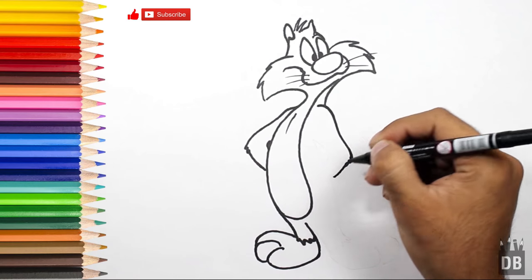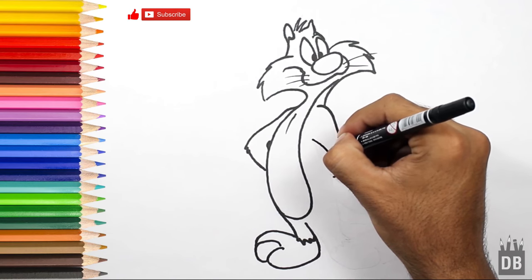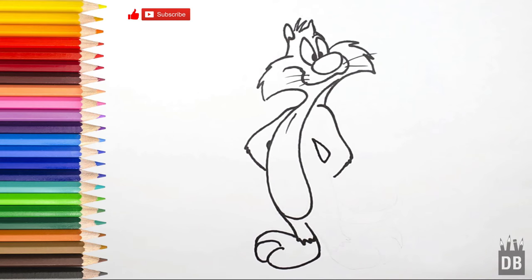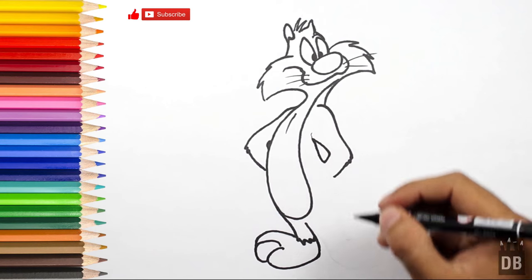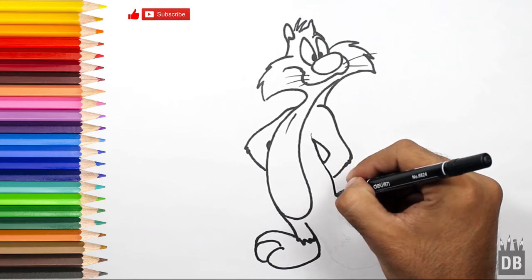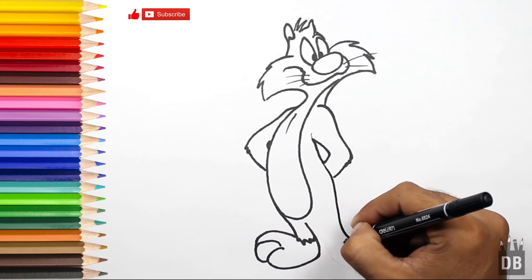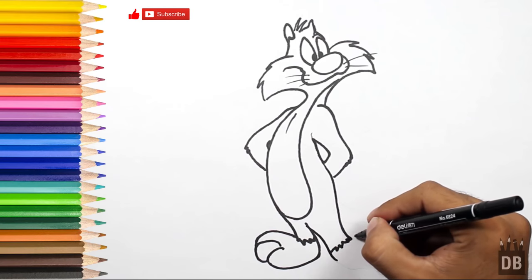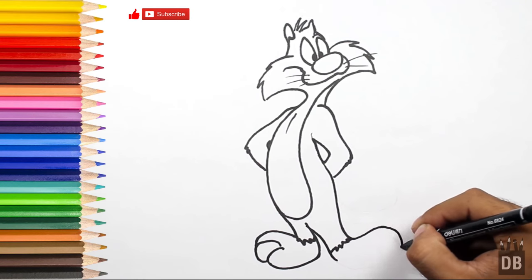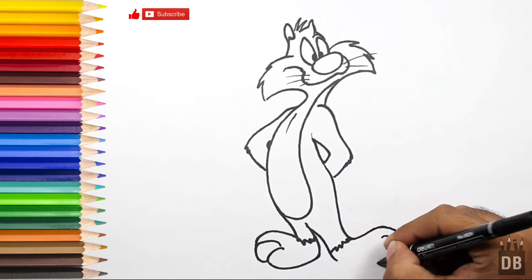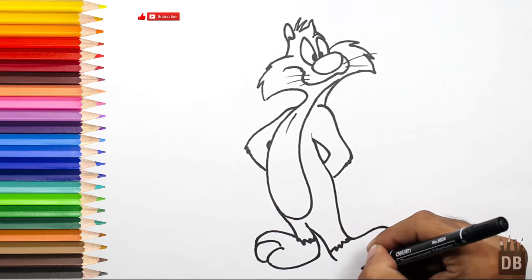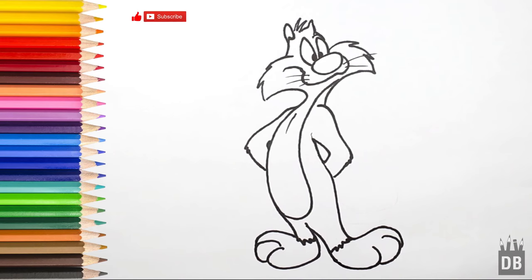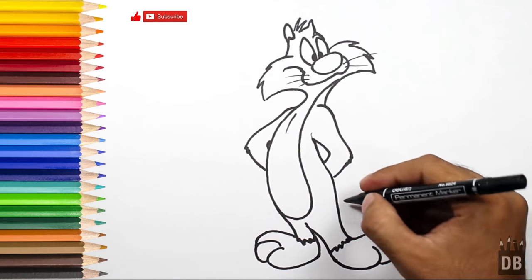And now we have to just make the tail thick from the starting point and thin from the end, and our character is done.